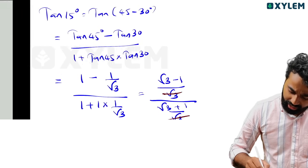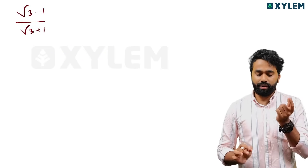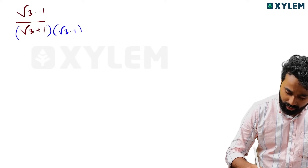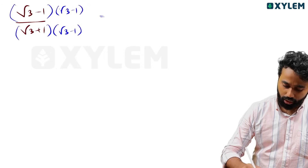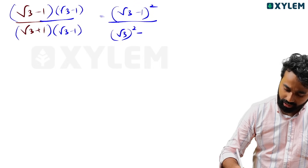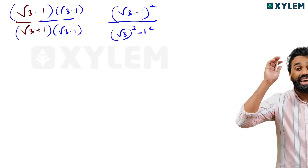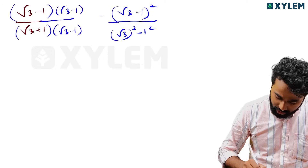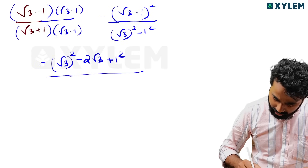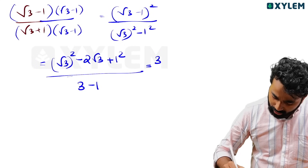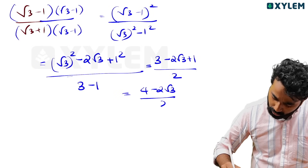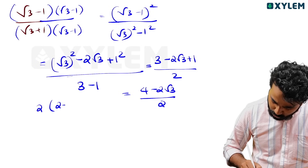When you simplify this, for full marks you should rationalize. The answer is 2 minus root 3. Using the identity: a plus b into a minus b equals a squared minus b squared. We get root 3 minus 1 whole square divided by a squared minus b squared, that is 3 minus 1 equals 2. So: 3 minus 2 root 3 plus 1 divided by 2, giving 4 minus 2 root 3 divided by 2, which equals 2 minus root 3.